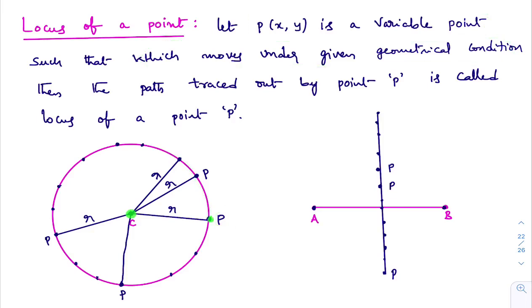Here C is a fixed point. P is a point which moves such that it is at a distance of r units from the fixed point C. Then the path traced out by point P is called the locus of P. In this example, if I trace out that path, I am getting a circle. So the locus of a point is a circle.